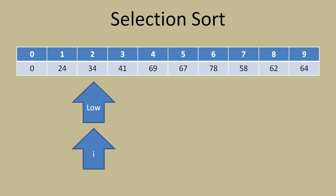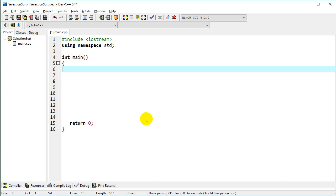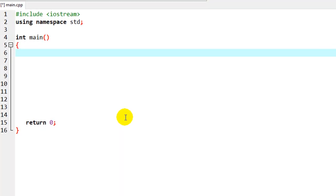The next step would be to reposition low and our indicator to element 2, because now we have the lowest element in 0 and the next lowest in 1. After the next step, we'd have the next lowest in 2 and continue down the line. So we can see how that works. Let's go to code and see what we can do.